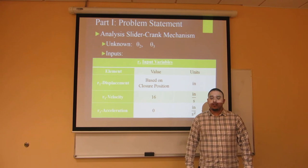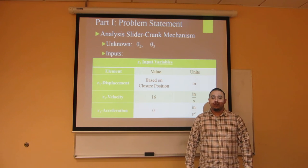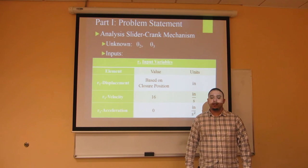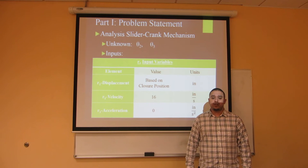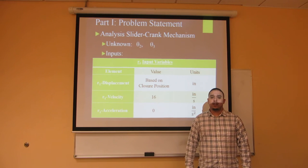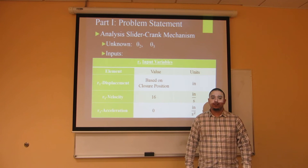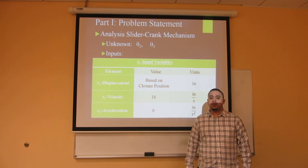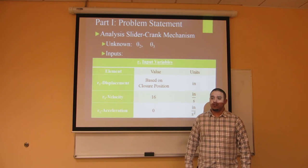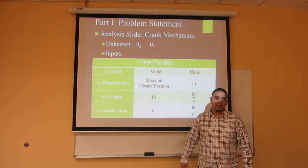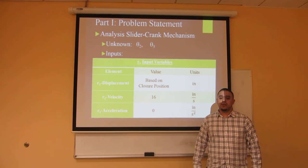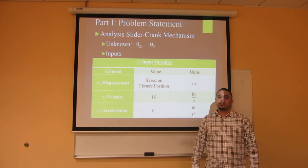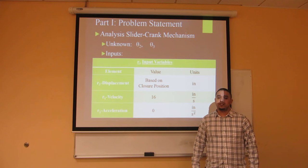For part one of the project, the slider crank mechanism analysis, there are two unknowns: theta two and theta three. The driving input of this mechanism is R1, but its displacement varies from position to position, so it does not have a fixed value. The main component of R1 is its velocity, which is 16 inches per second and is used to drive the mechanism through its position. Because R1 does not have an acceleration component, the motion of the slider crank is continuous and constant.